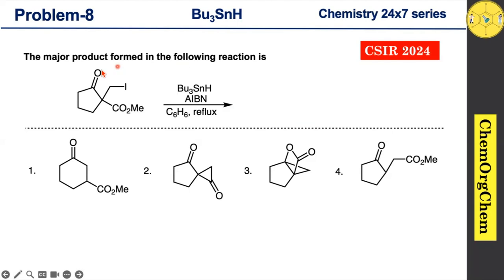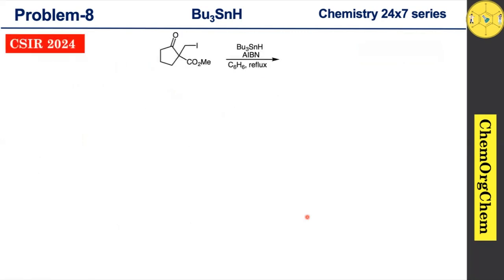Based on this problem, this substrate reacts with tributyltin hydride in the presence of AIBN, which produces a product. There are four options given, so let's figure out together which one is the correct option before moving to our solution.